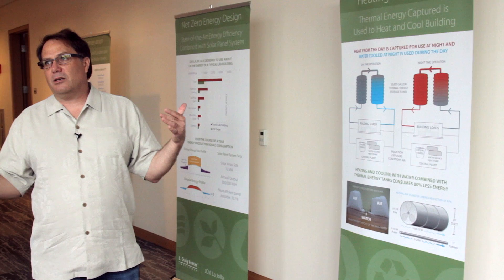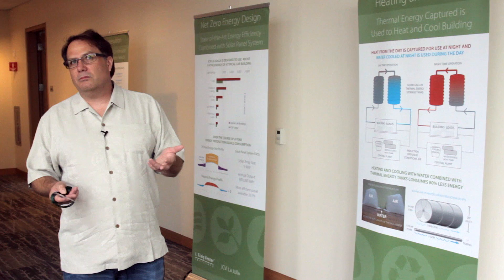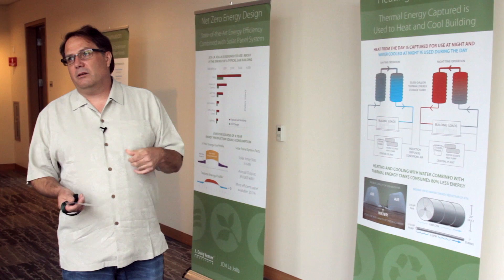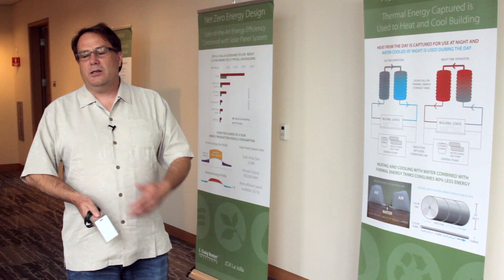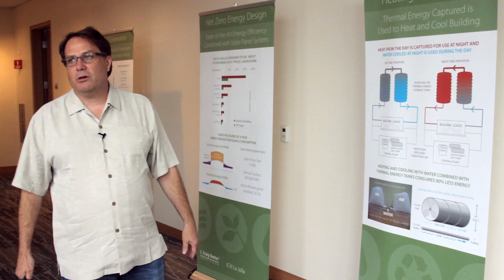As a design firm we also size our duct at a lower flow rate. Industry standard is 0.08 to 0.1 feet per 100 feet of static pressure; we design at 0.05. That lower static pressure drop reduces energy tremendously because it follows a square or cube root rule, so your horsepower requirement falls significantly.